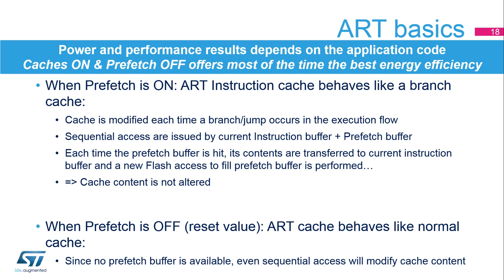The instruction cache behaves differently depending on whether or not the prefetch buffer is enabled. If the prefetch buffer is enabled, the ART instruction cache behaves like a branch cache — the cache is modified each time a branch or jump occurs in the execution flow. Sequential accesses are issued by the current instruction buffer and the prefetch buffer. If the prefetch buffer is disabled, the ART instruction cache behaves like a normal cache, and even a sequential access will modify the cache content. The power and performance trade-off must be evaluated for each application. For most applications, enabling the prefetch buffer slightly increases performance but with higher consumption. Most of the time, the best energy efficiency is provided with caches enabled and the prefetch buffer disabled, as it often reduces the number of flash accesses.